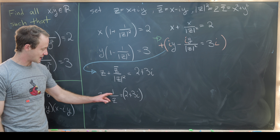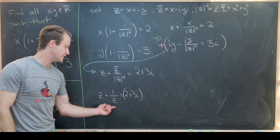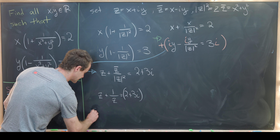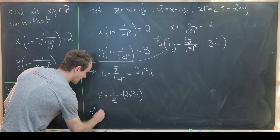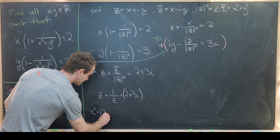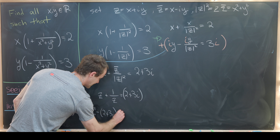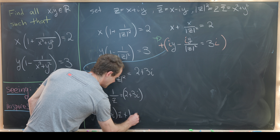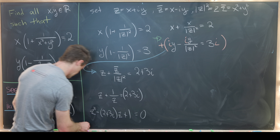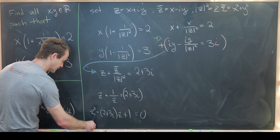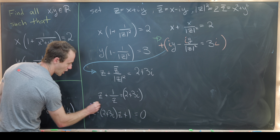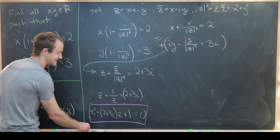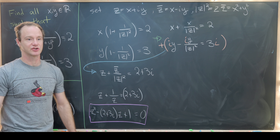Multiplying both sides by z and rearranging gives z² minus (2 + 3i)z plus 1 equals 0. We've built a nice quadratic equation in z that we can solve.